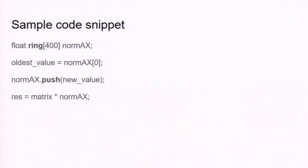Here is a code snippet of our ring buffer. This is a ring buffer where you can push new values and then multiply a matrix with the ring buffer, using it as a normal linear vector. If you access the zero element, you always get the oldest value. It's very convenient for the programmer.